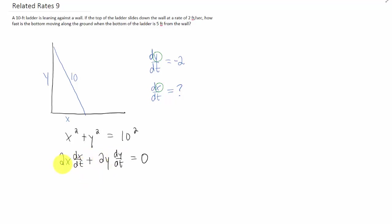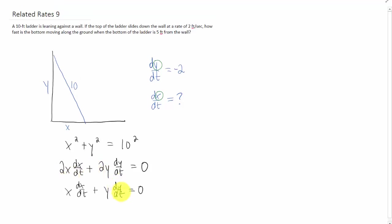We can simplify by dividing both sides of this equation by 2. And we have our equation relating our two rates.